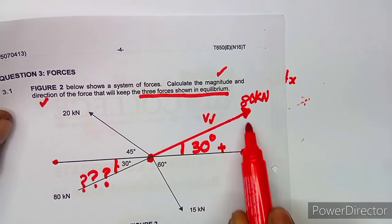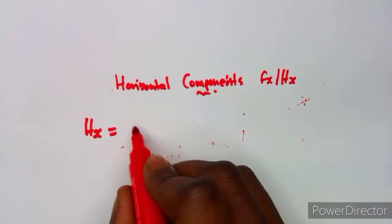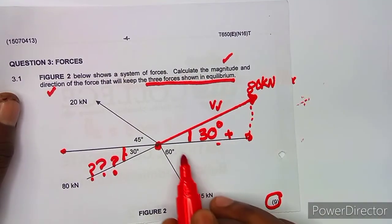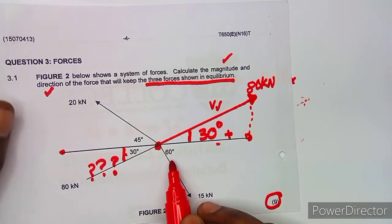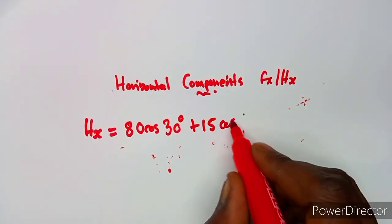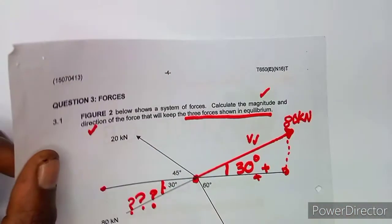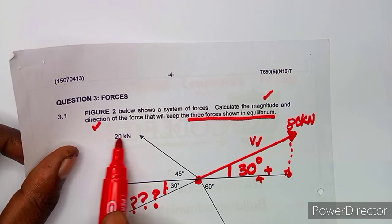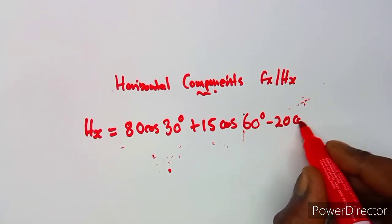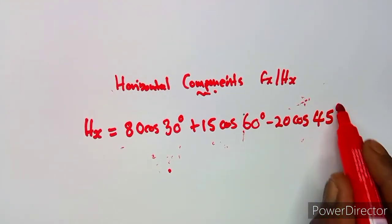Anything to do with the horizontal component forms a triangle where the force is in the adjacent, which is why we use cosine. So it's 80 cos(angle). Then for the 15 kN force, it is also on the positive side, so it's plus 15 cos 60 degrees. For the 20 kN force, its horizontal component is in the negative direction, so it's negative 20 cos 45 degrees — that is the angle between the force and the horizontal line.